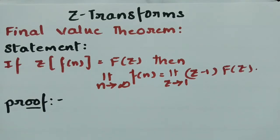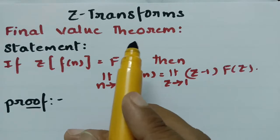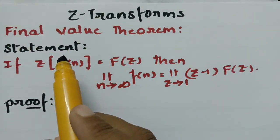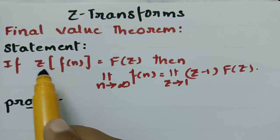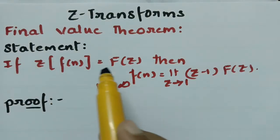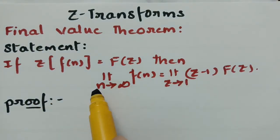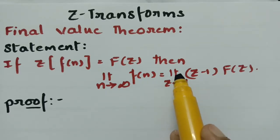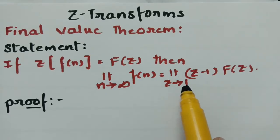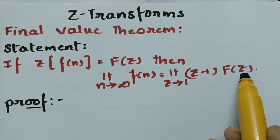Today's video is on Z transforms. I am going to explain the final value theorem. The statement of this theorem states that if the Z transform of f(n) is equal to capital F(z), then the limit as n tends to infinity of f(n) is equal to the limit as z tends to 1 of (z minus 1) into capital F(z).